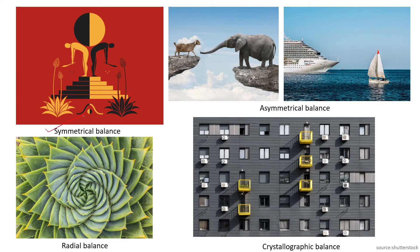There are types of balance. The first is symmetrical balance, where both sides are equal. The second is asymmetrical balance — for example, an elephant and rock balanced with a goat and rock. The rock on one side is at a lower elevation and the rock on the other side is at a higher elevation, so the smaller element is balanced by being placed at a slightly higher elevation.